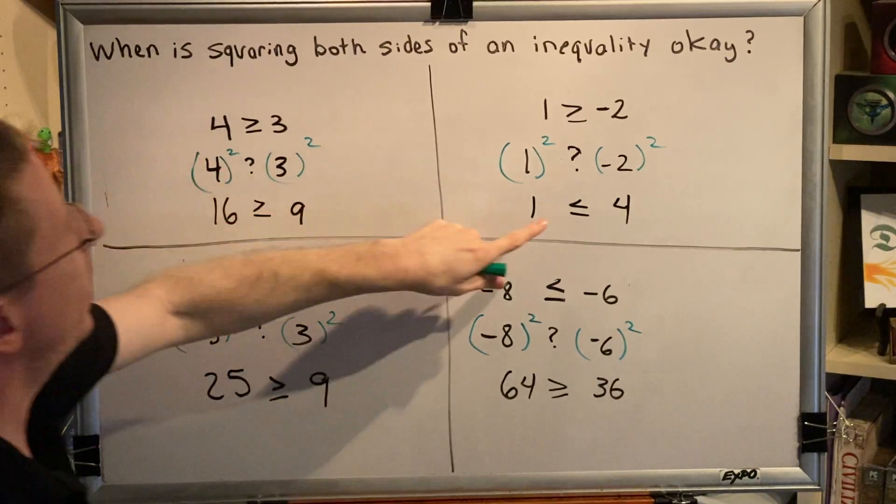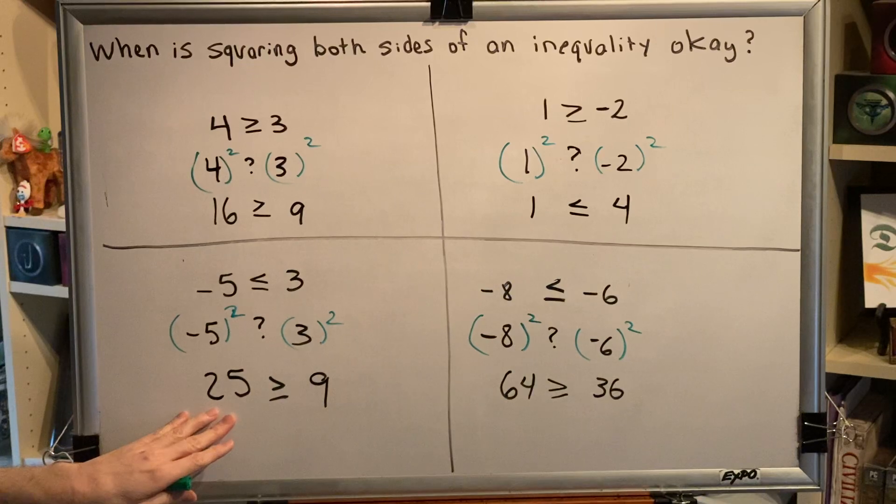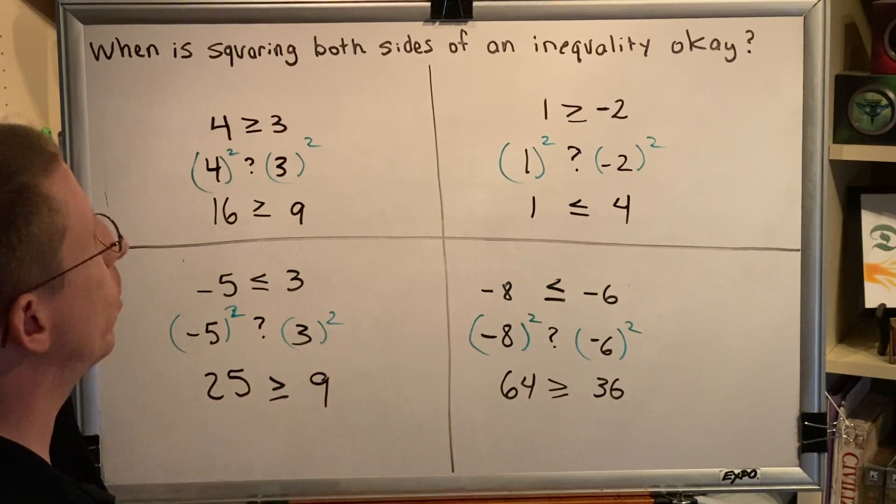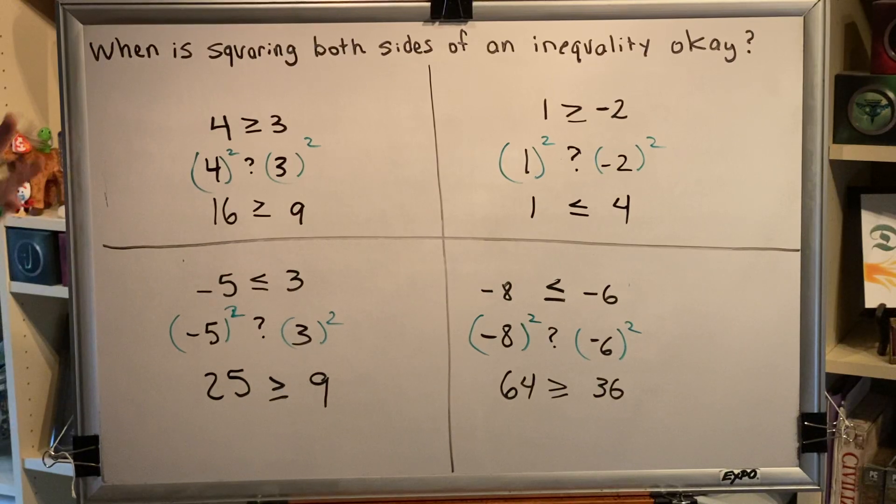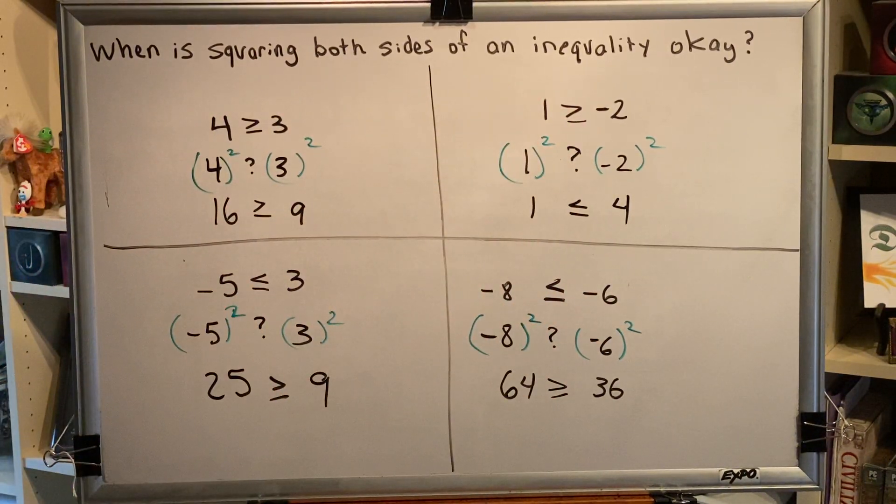But here if we keep the sign the same that would be bad, and here if we keep the sign the same that would be bad, and here if we keep the sign the same that would be bad. So it seems like this is the good scenario and these three are the bad scenarios.